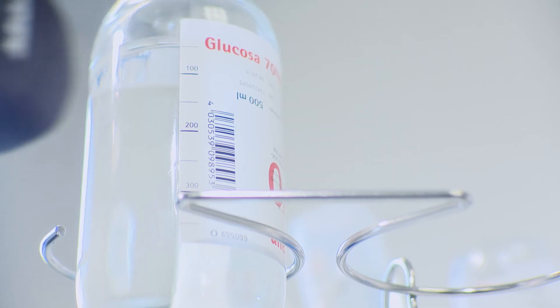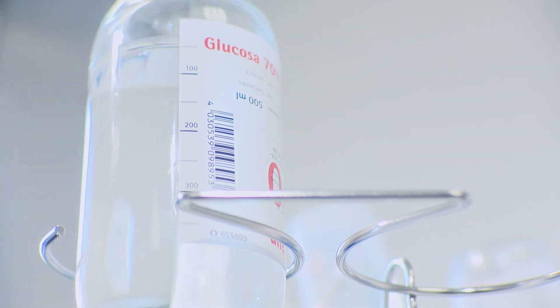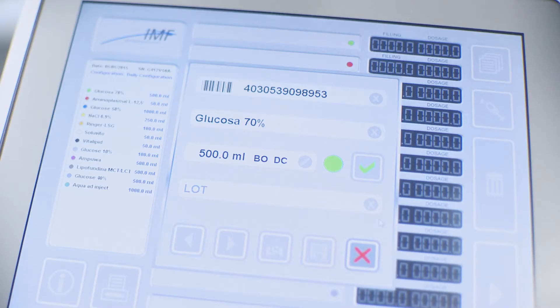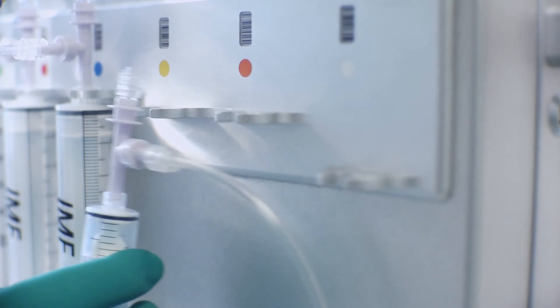Use the barcode reader to scan the port barcode on the compounder followed by the container barcode. If performed correctly, the compounder will automatically display the next ingredient to connect. This will verify the right container is attached to the corresponding line.